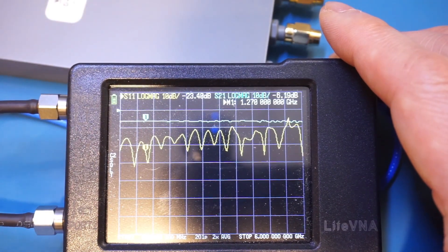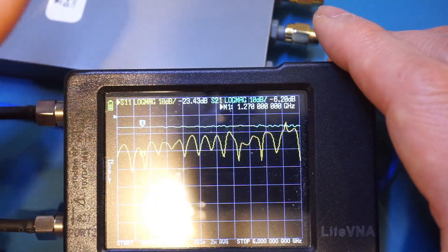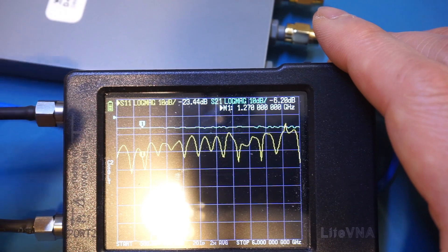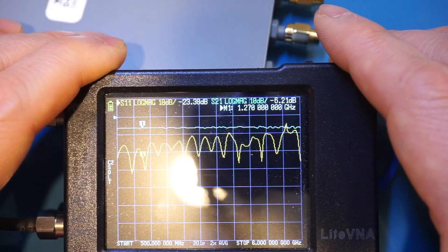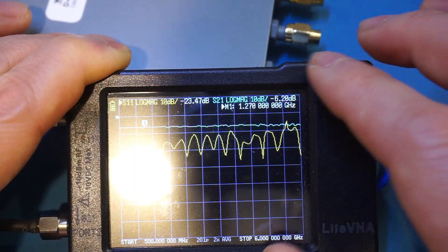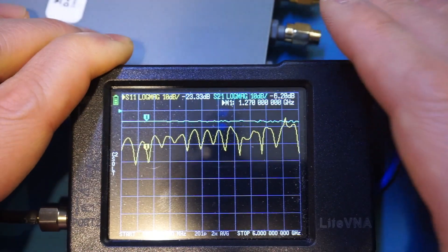And the yellow trace you see here, that's the return loss looking into the input port of this splitter. And according to spec it should stay mostly under 15 decibels, which we definitely can see that is indeed what we're getting here. Now towards the higher end it gets a little bit inaccurate, that's due to the limitation of this nano VNA.